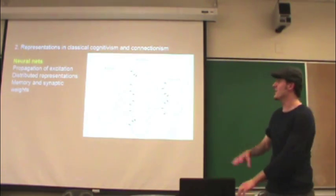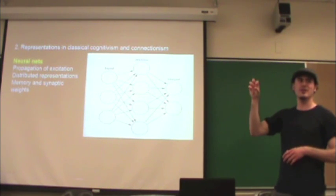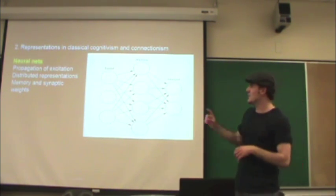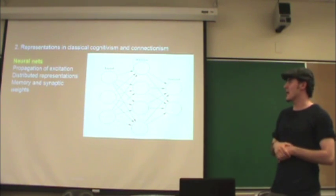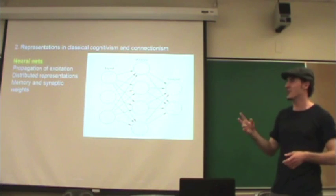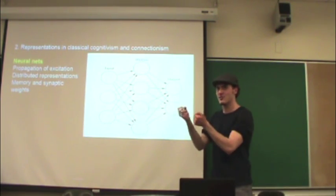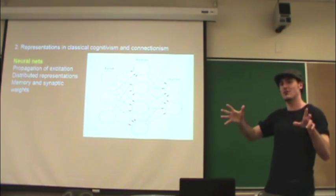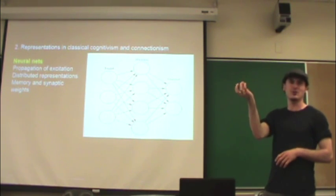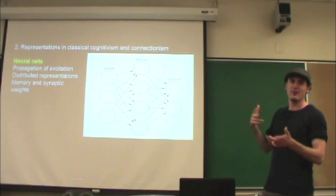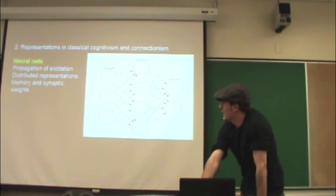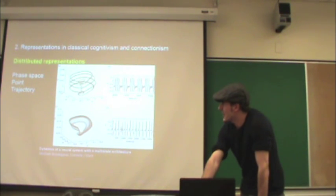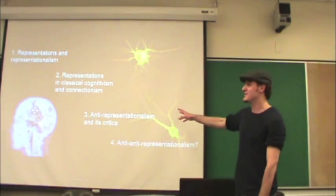In any given unit in a connectionist network, the activation is summed up, and if it goes over a certain threshold, the activity propagates through the rest of the network. There are interesting information processing properties — you can construct neural networks that do algorithms and calculations. A lot of computational technology we use today relies on this kind of architecture. In these networks, representations are encoded not discretely but in a distributed form. It's the sum of connections — the weights between units — that account for the distributed nature of a representation. Rather than one discrete token, you have a network structure where what you want to encode is encoded dynamically and in a distributed manner throughout the network.